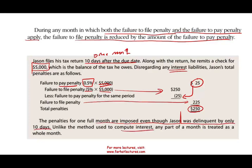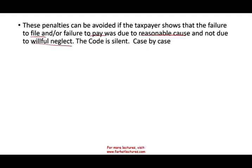Unlike the method used to compute interest, any part of a month is treated as a whole month for penalties — so these are different rules. These penalties can be avoided if the taxpayer shows the failure to file or failure to pay was due to reasonable cause and not due to willful neglect. They don't tell us exactly what that means, so it's basically case by case — the IRS will determine each situation.